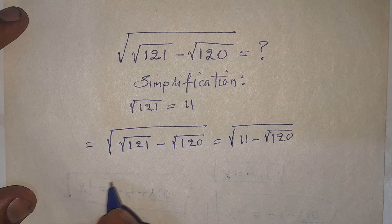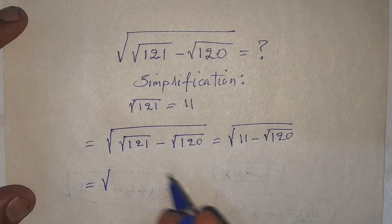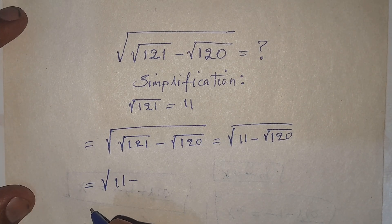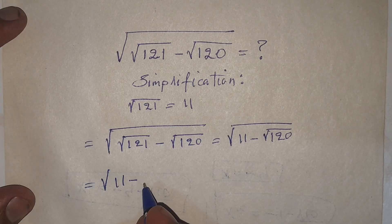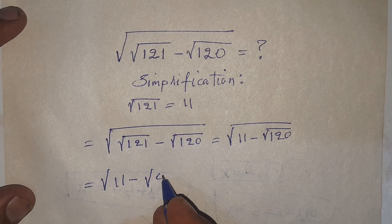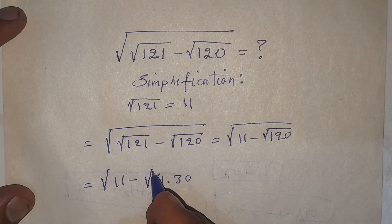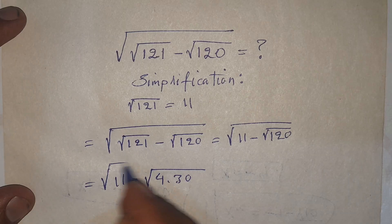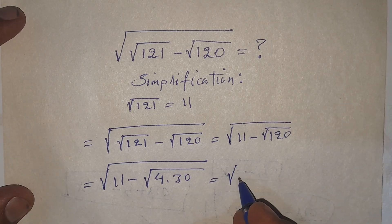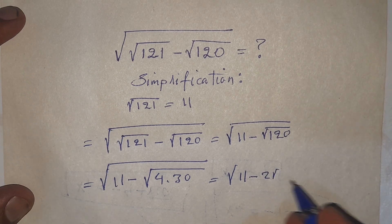Now, square root of 120 can be written as square root of 4 times 30, and this equals 2 times square root of 30. So we have square root of 11 minus 2 square root of 30.